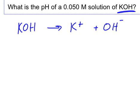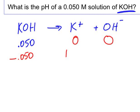This is an Arrhenius base. So 0.050, if I want to write this out, if I start with zero of the other two, all of it breaks down, all 0.050, which increases my K+ by 0.050 molar and my OH- by that amount as well.